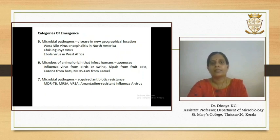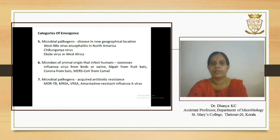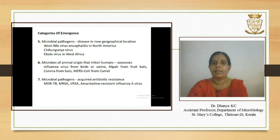Category 6 consists of microorganisms of animal origin that infect humans. These types of infections are known as zoonoses, and include animal-associated microorganisms newly able to infect humans. Examples are influenza virus from birds or swine, Nipah from fruit bats, and MERS coronavirus from camels.